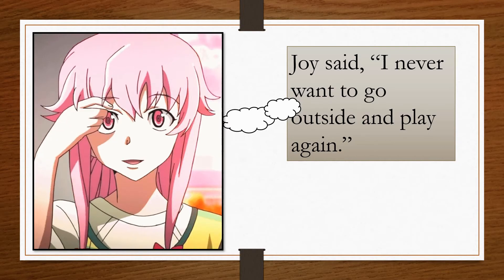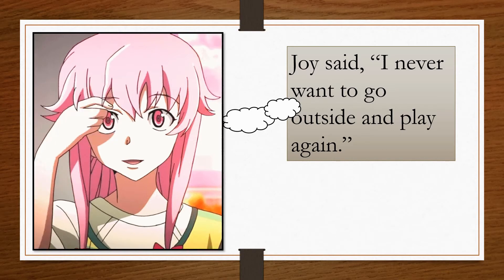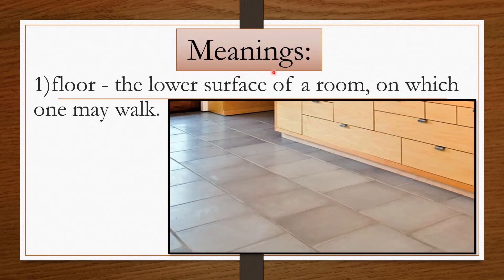Now let's see the meanings of some words from our story. The first word is 'floor.' Floor means the lower surface of a room on which one may walk. We have floors in our schools, homes, and everywhere — it is the surface on which we walk.